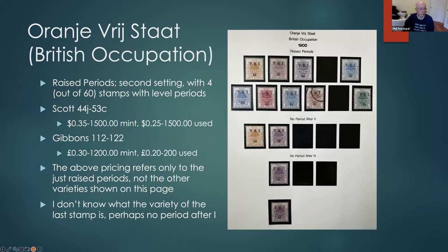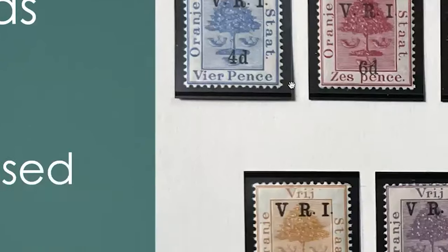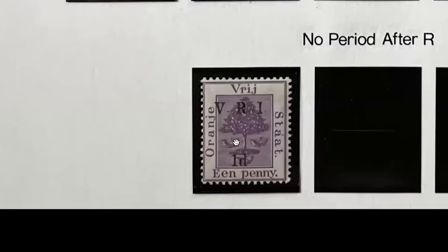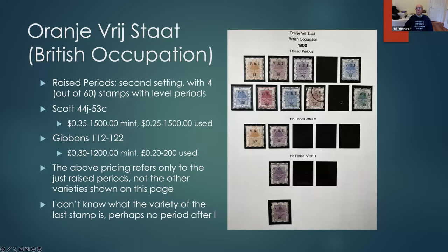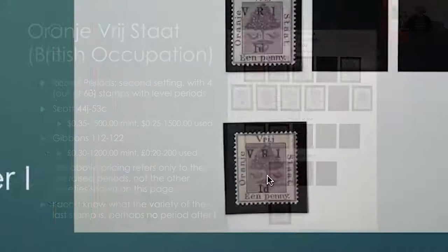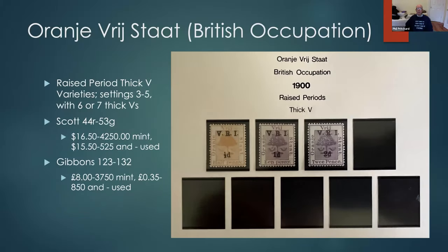After that, subsequent printings were done with raised periods — the dots after the letters are higher than the bottom of the letters. There are also varieties with no period after the 'V,' no period after the 'R,' and so on. Again, the two stamps Scott lists that Gibbons does not list appear here. There's also a variety where the letter 'V' is thicker than normal — a different setting with a slightly different font, occurring six or seven times per sheet in those particular printings. And again, some very expensive ones appear here.